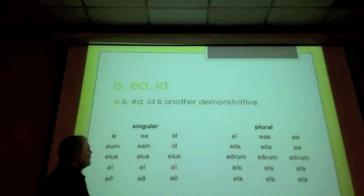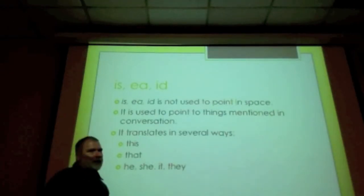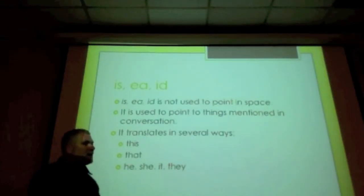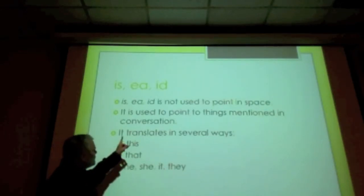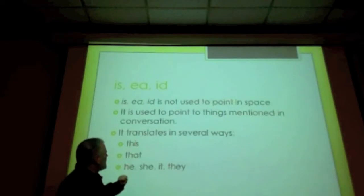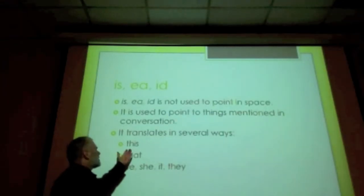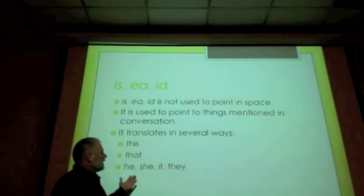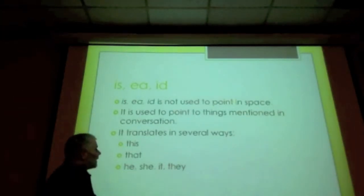Is/ea/id is not used to point in space. Instead, it is used to point to things mentioned in conversation. It translates in several ways depending on context: you can translate it as 'this,' 'that,' 'he,' 'she,' 'it,' or 'they.' Those are all possible translations depending on the context.